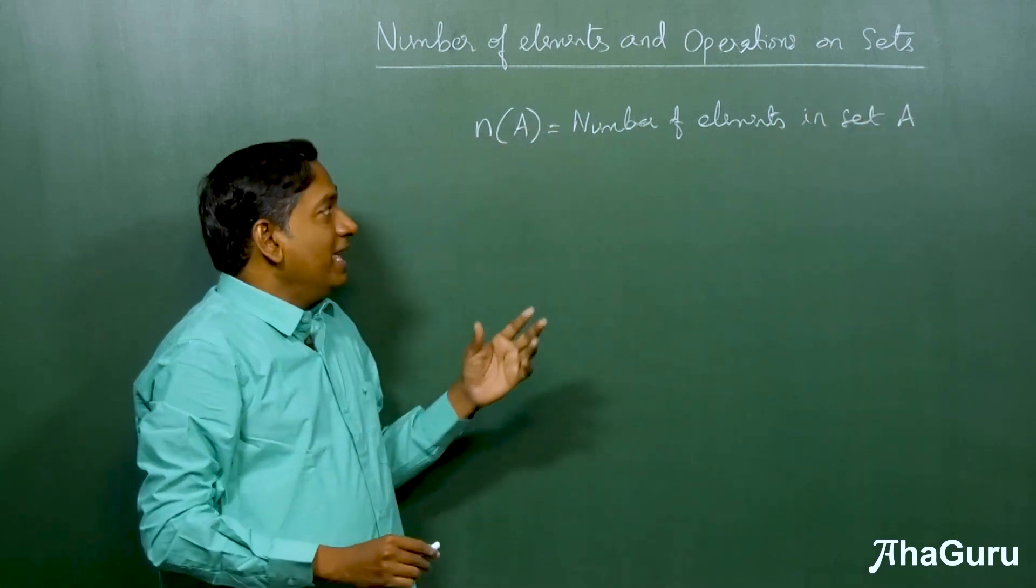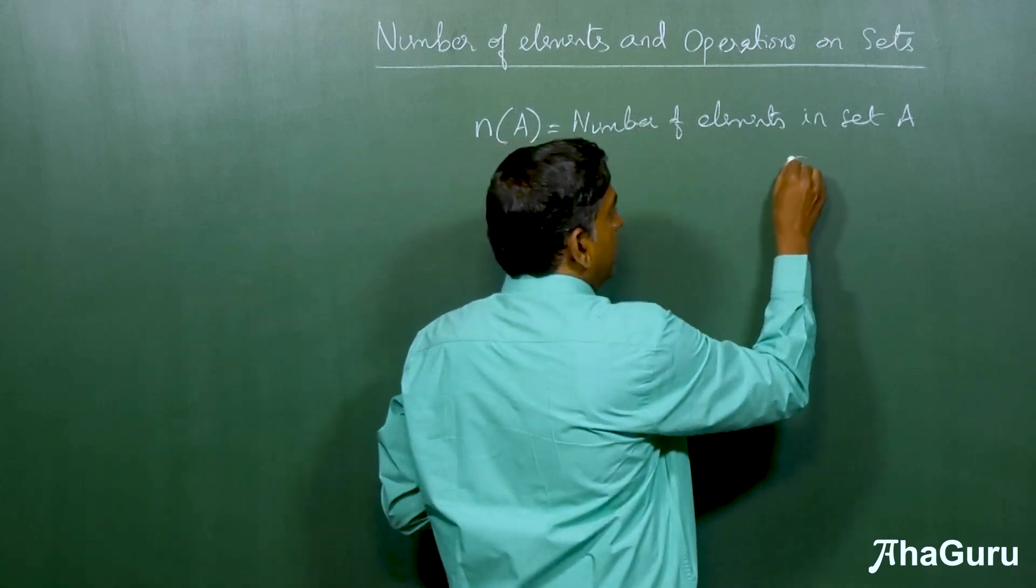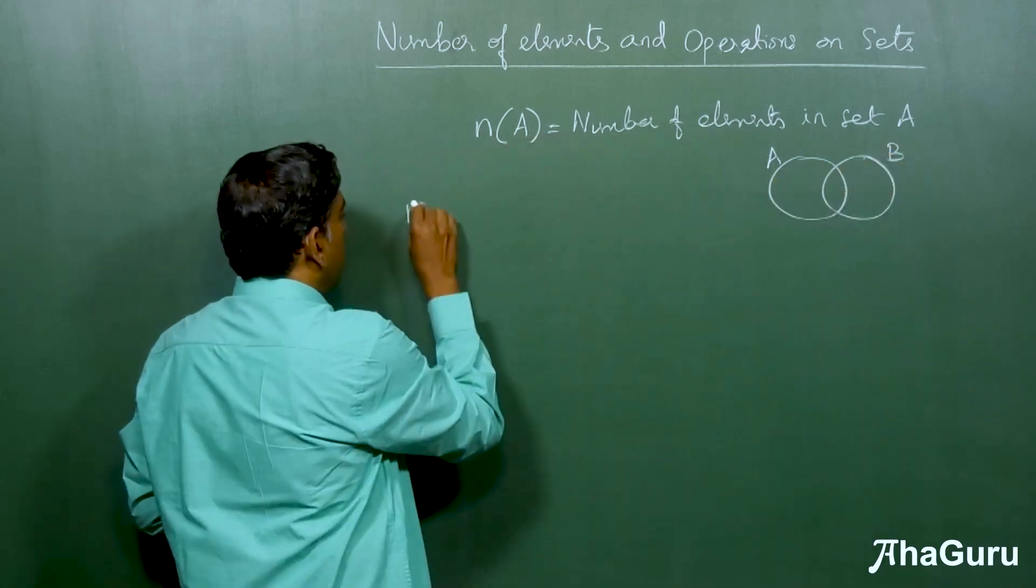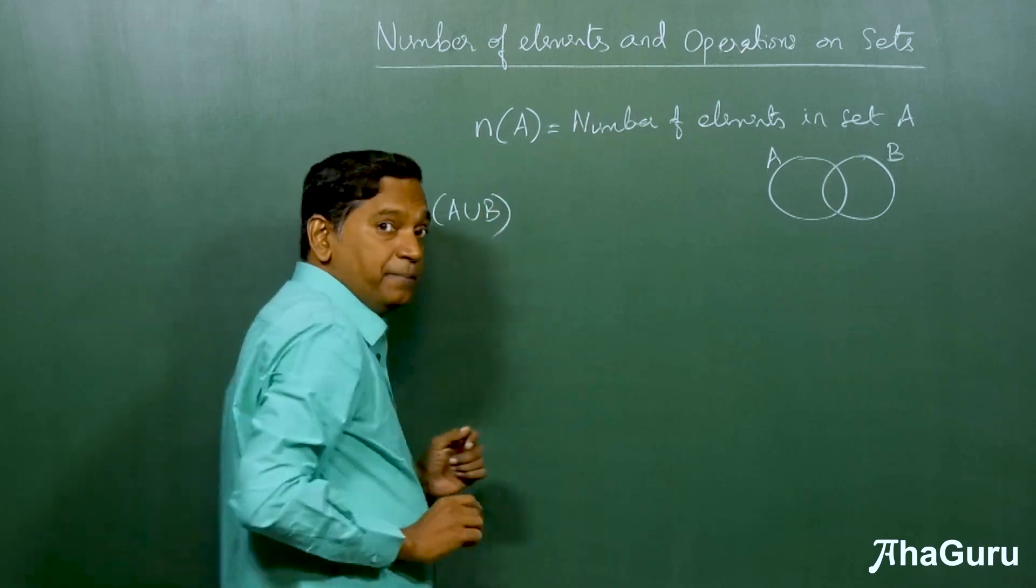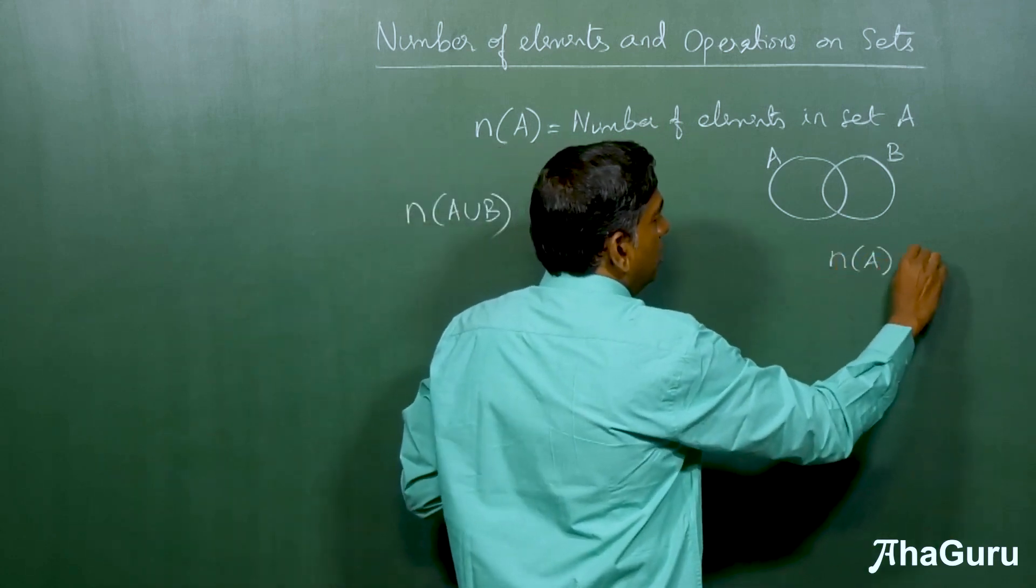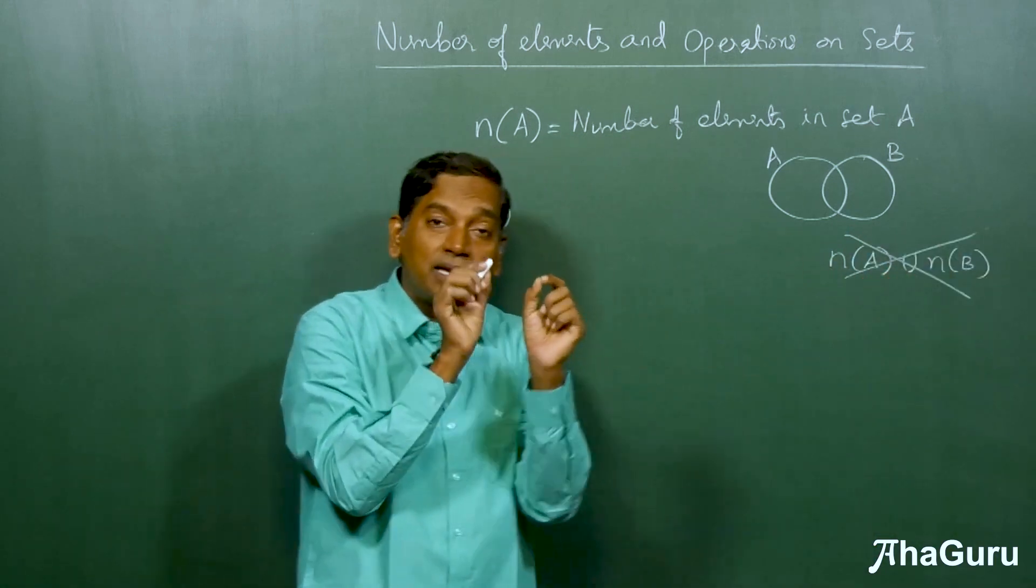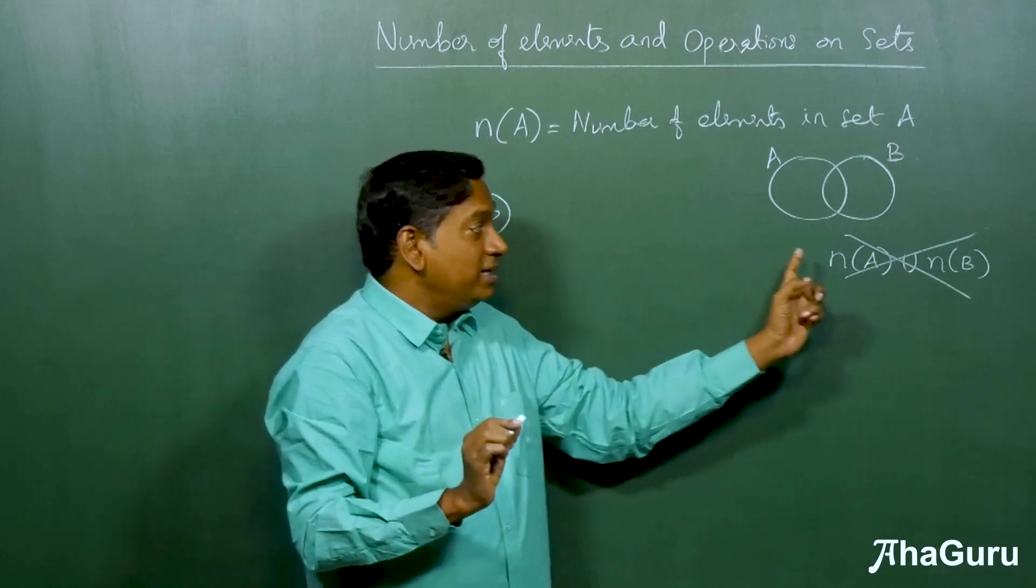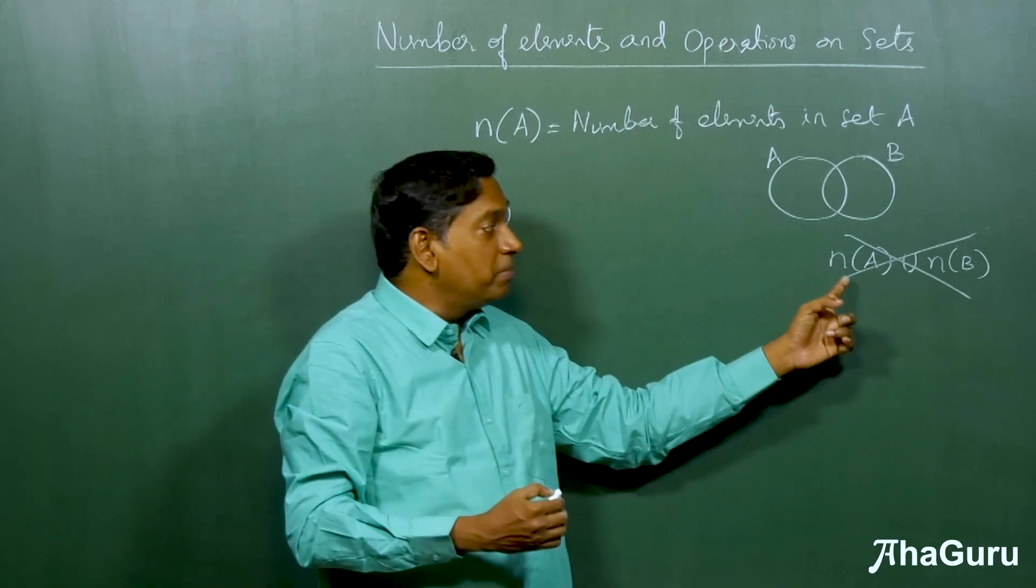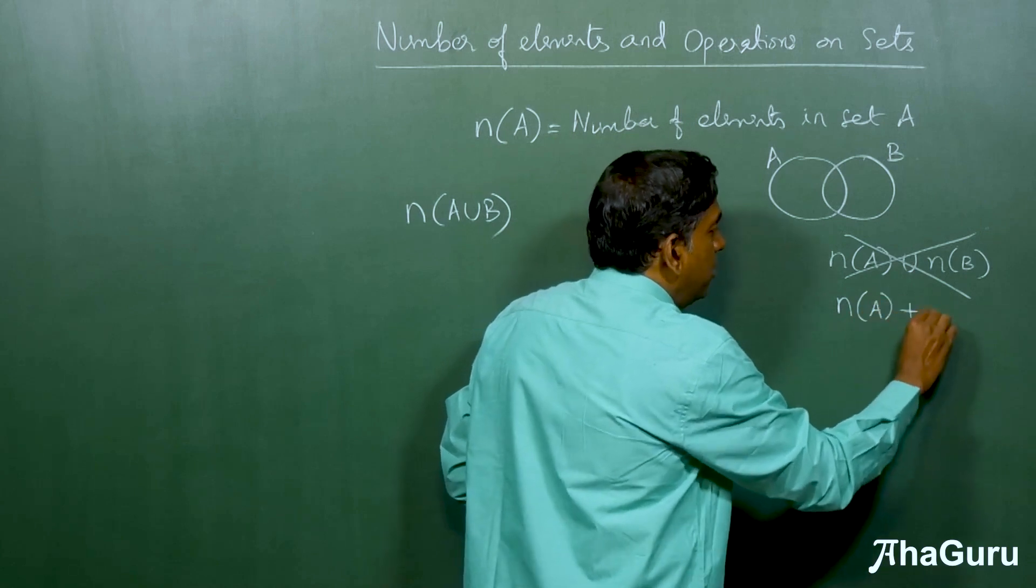Now the question is if you want to find the number of elements in A union B, let's take a Venn diagram and let's say this is A, this is B. I want to find the number of elements in A union B. Now what we cannot write is n(A) union n(B). This is wrong because union is an operation that applies between two sets. n(A) is a number. The moment we put n of, we are changing from set to number. Numbers can only be added. So the next guess that people will make is maybe it's n(A) plus n(B).